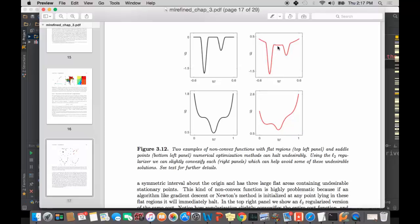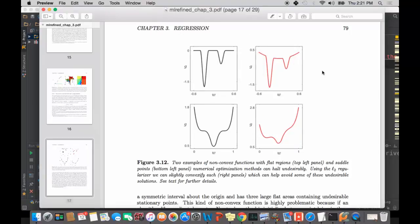Now we haven't dealt with the middle portion of the function, which is still problematic. But we have dealt with the issue of getting caught on flat areas that were originally on the left and the right of that cost. So that's what L2 regularization allows us to do. How do we achieve this L2 regularized form of the original cost function? I'll leave the mathematical details for you to check out in the text itself, but it's really quite simple. All we do is add a very simple convex cost function to this original cost.